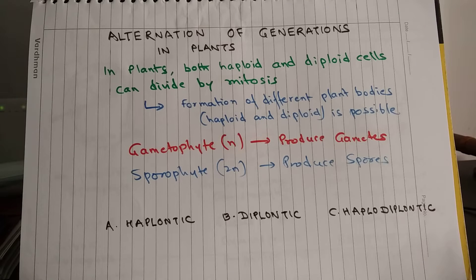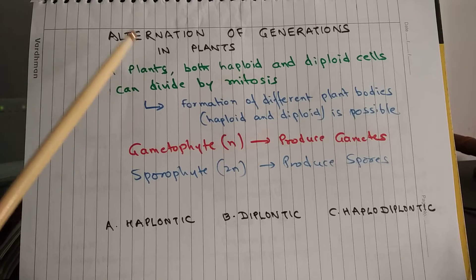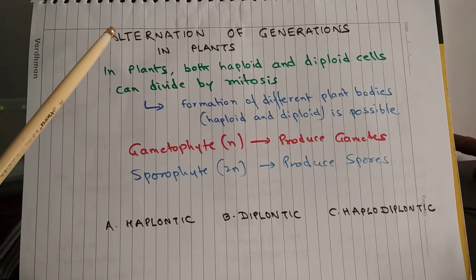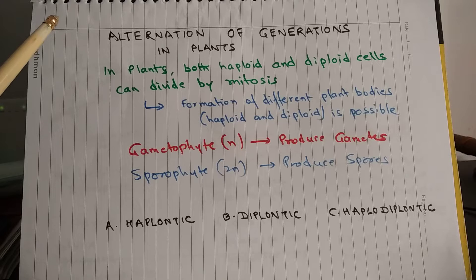Hi, this is Ajay Anand and welcome to science classes from ExcelUp.com. In this lesson you will learn about alternation of generation in plants and this topic has been taken from class 11th biology.